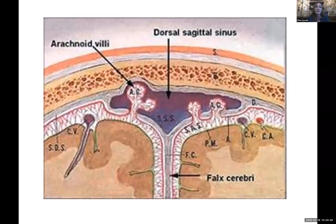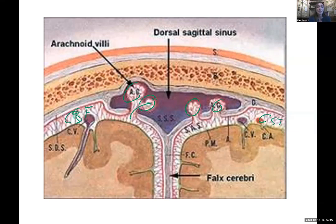This picture shows more of the arachnoid villi. The cerebral spinal fluid is within this white space and it comes out into these arachnoid villi. What's in here is a dural sinus, and there is actually blood in here. So the cerebral spinal fluid is going to be returning back to the blood, and then it goes to the jugulars and back to the general circulation.